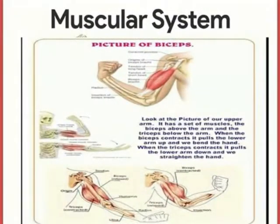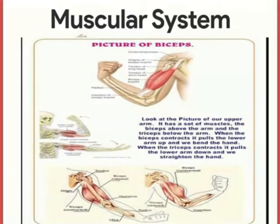Look at the muscles above and below the arms. When the muscle above the arm compresses, it pulls the lower arm up and bends the hand. When the muscle contracts, the lower arm goes down and the hand is pressed.